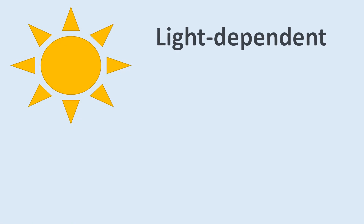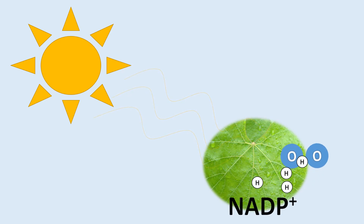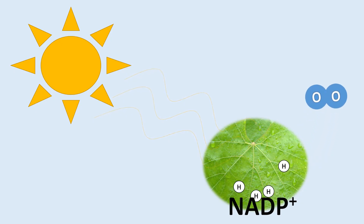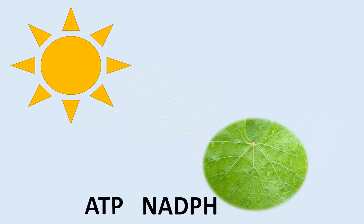Photosynthesis takes place in two major stages. In the first stage, the light-dependent reactions, radiant energy from the sun is absorbed by pigments in the chloroplasts. This energy is used to oxidize water molecules, producing oxygen as a byproduct, and reduce NAD+ to NADPH, as well as make ATP.